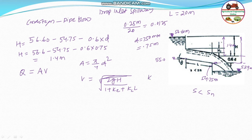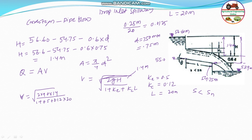K_e is given as 0.5, K_c is 0.12, and the pipe length l is 20 meter. With H = 1.4 meter, velocity V = square root of (2 × 9.8 × 1.4) divided by (1 + 0.5 + 0.12 × 20) = 2.65 m/s. Therefore, discharge Q = (π/4) × (0.75)² × 2.65, giving the answer for part (a).